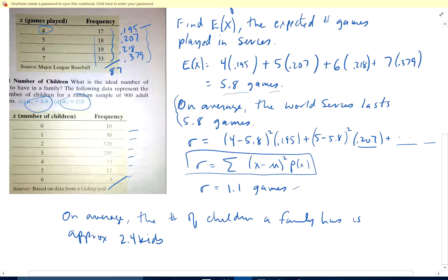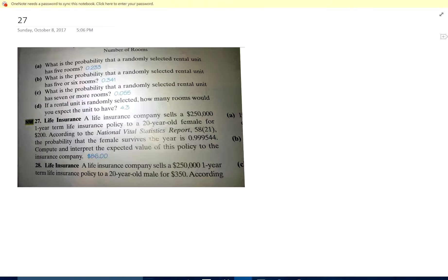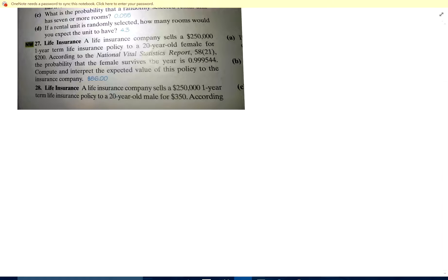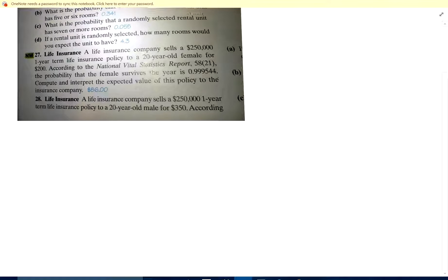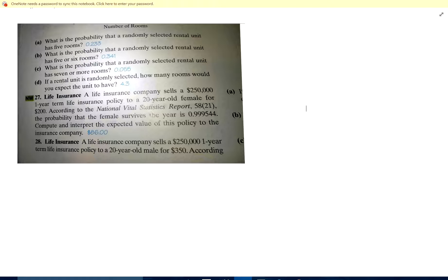There you go on those problems. Let's go on to 27. We've got a life insurance company that sells $250,000 in one year. Actually, you know what? Let's stop there and do that in the next video.